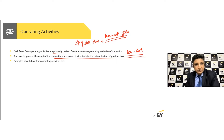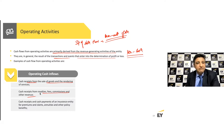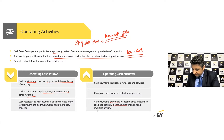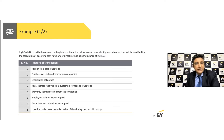Cash flows from operating activities include: cash received from sale of goods or services; cash received in the form of royalties, fees, or commissions; for an insurance company, premiums, claims, or annuities; payments to suppliers; payments to or on behalf of employees; and income taxes — unless they can be specifically identified with financing or investing activities.